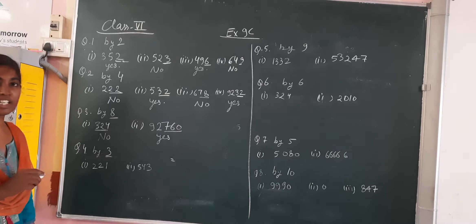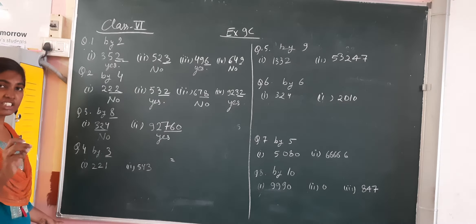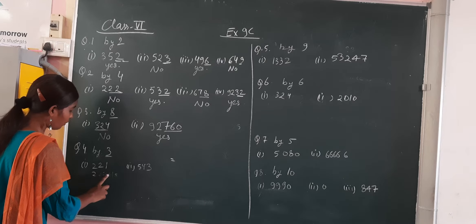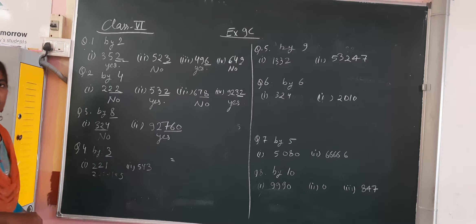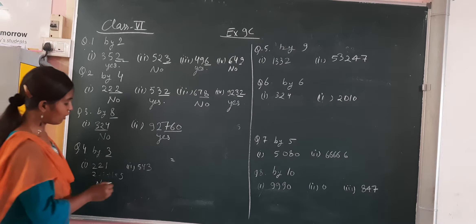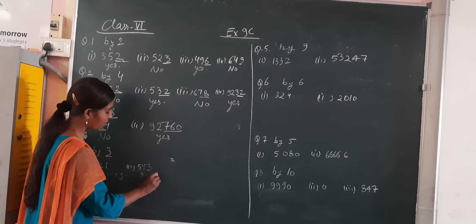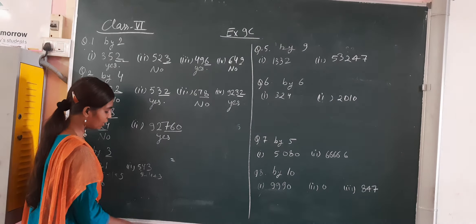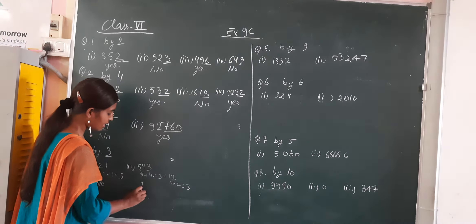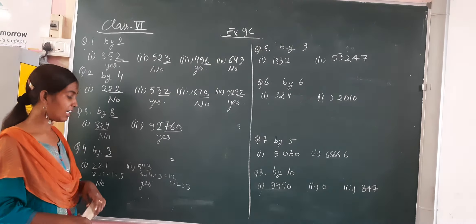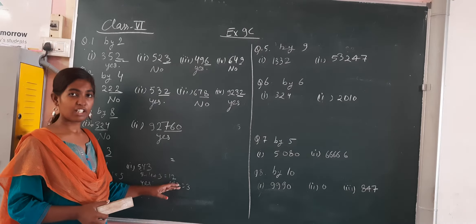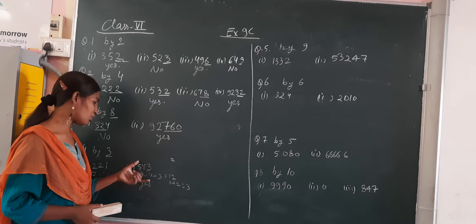Now, by 3. How we are checking that a number is divisible by 3? We will do the digit sum. Here, 2 plus 2 plus 1 — it is coming 4 plus 1, which is 5. So 5 is not divisible by 3, meaning it is also not divisible by 3. Now, digit sum of this: 5 plus 4 plus 3 — 5 plus 4 is 9, 9 plus 3 is 12. Again digit sum: 1 plus 2 is 3. So yes, this number is divisible by 3. If the digit sum is 3 or any multiple of 3, then the number is also divisible by 3.